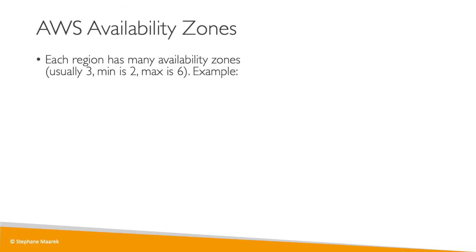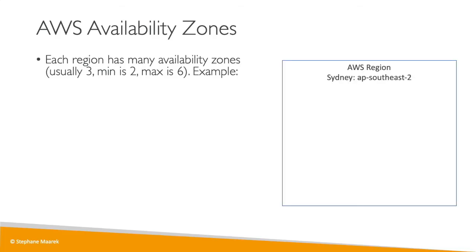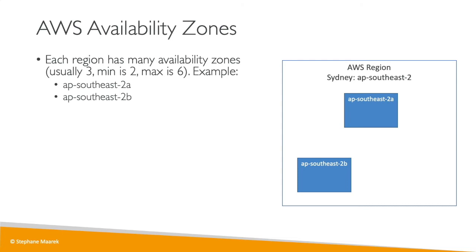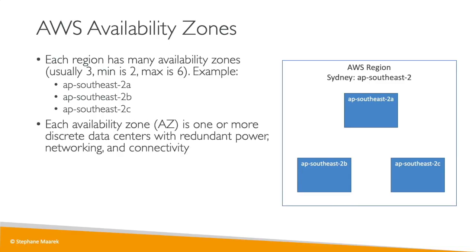Availability zones are what actually exist inside a region. Each region will have many availability zones — usually three, with a minimum of two and a maximum of six. Taking Sydney as an example, the Sydney region code is ap-southeast-2, so we have three availability zones: ap-southeast-2a, ap-southeast-2b, and ap-southeast-2c.